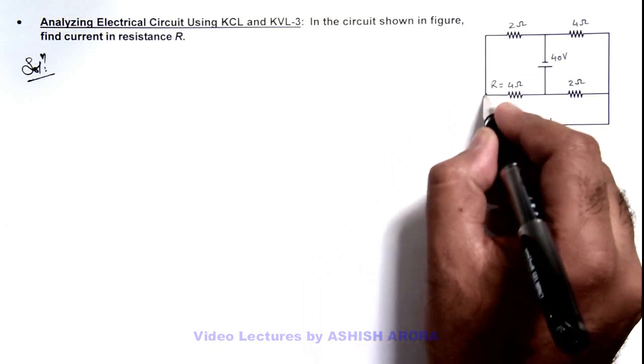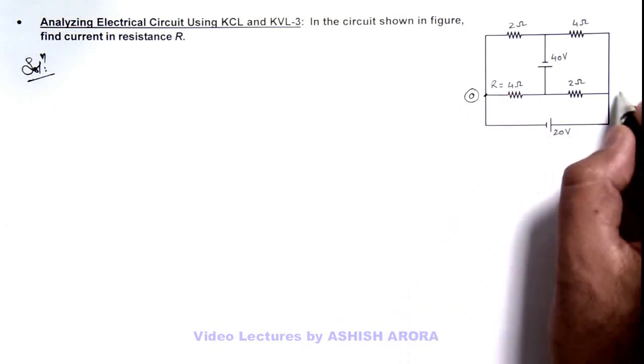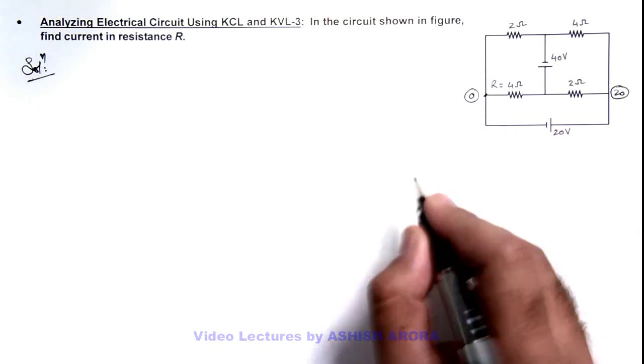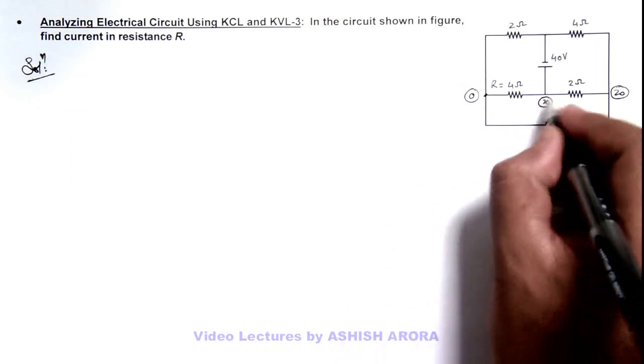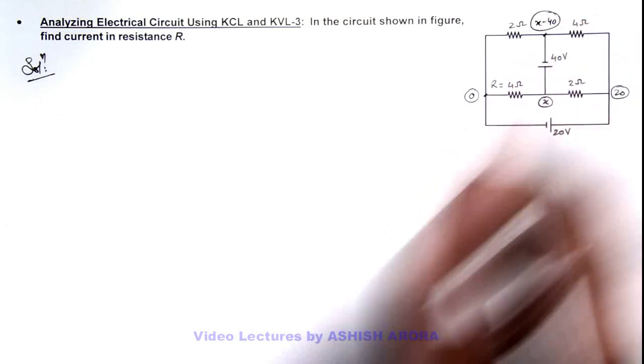Say if I take potential on one side of this resistance as zero, due to this 20 volt battery, potential here will be 20. If here I take potential as x, at this junction it will be x minus 40 due to this 40 volt battery.